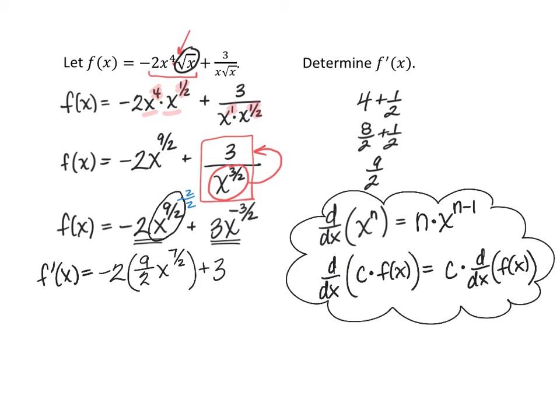We'll do that again. The 3 is the constant multiple, the exponent -3/2 comes in front, and subtract 1 from the exponent (like subtracting 2/2), giving us -5/2.